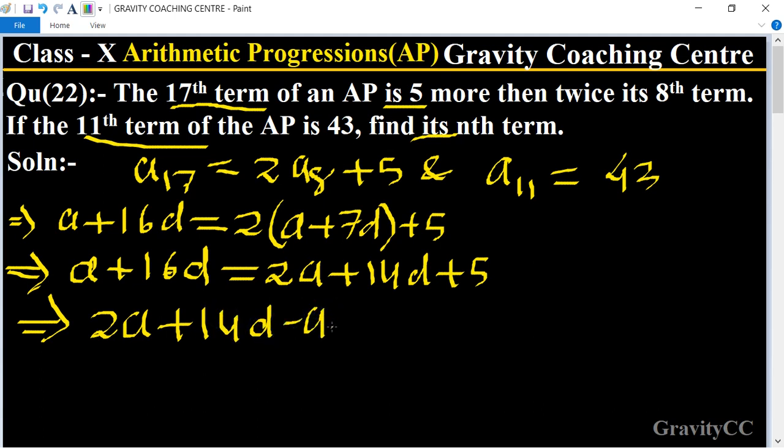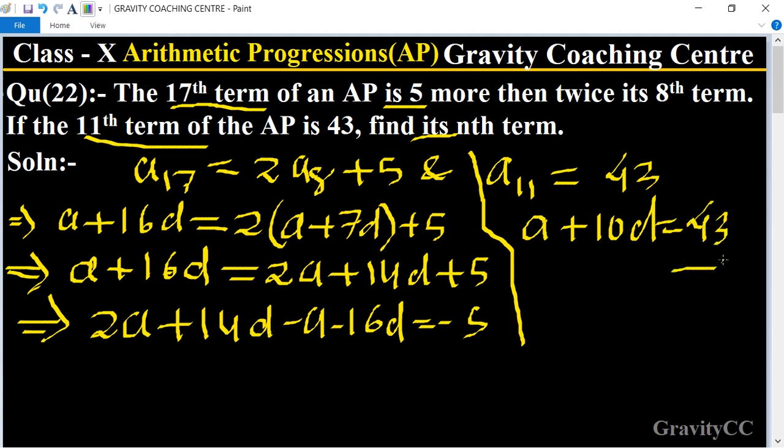Rearranging, 2a + 14d minus a minus 16d equals minus 5. And a11 equals a + 10d equals 43, this equation is the second. This implies that a + 2d = -5, this is the first equation.